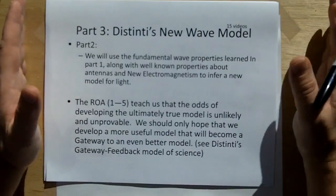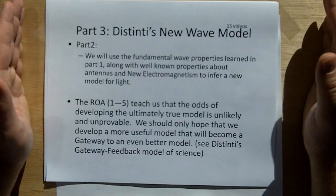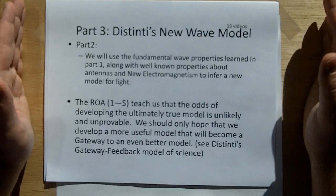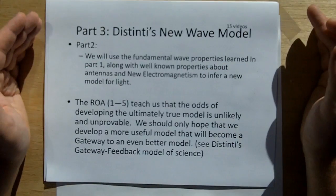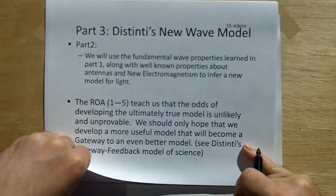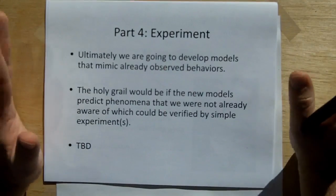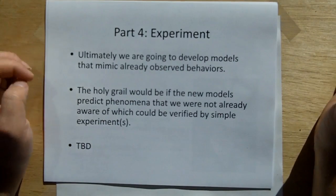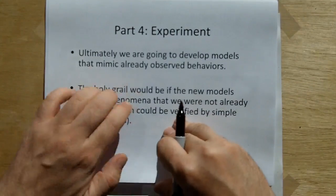From the rules of acquisition, one through five, we learned one very important thing. The odds that we're actually going to develop the true model of light is not very likely. We should never assume that we're ever going to get the right model. The key is to develop a model that's useful, more useful than present theory. And that model will help us do more things that we could do before, expand our footprint, and allow us to find the next anomaly which we have to solve. And the last part, ultimately we're going to develop models that mimic already observed behaviors. The holy grail would be if the new models predict phenomena that we were not already aware of, which could be verified by, hopefully, simple experiments.